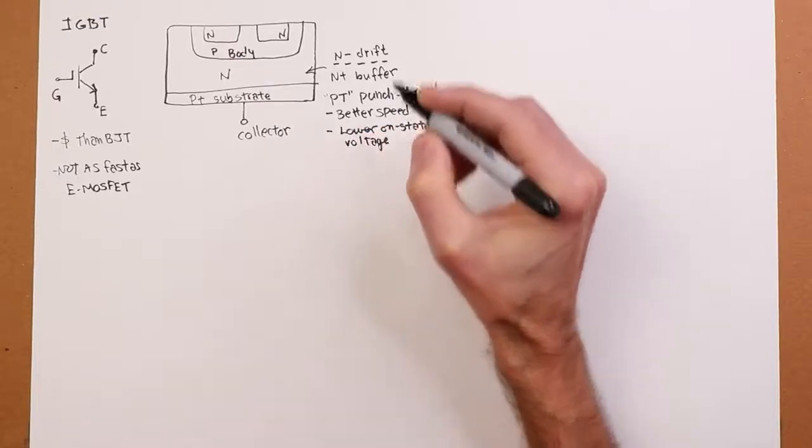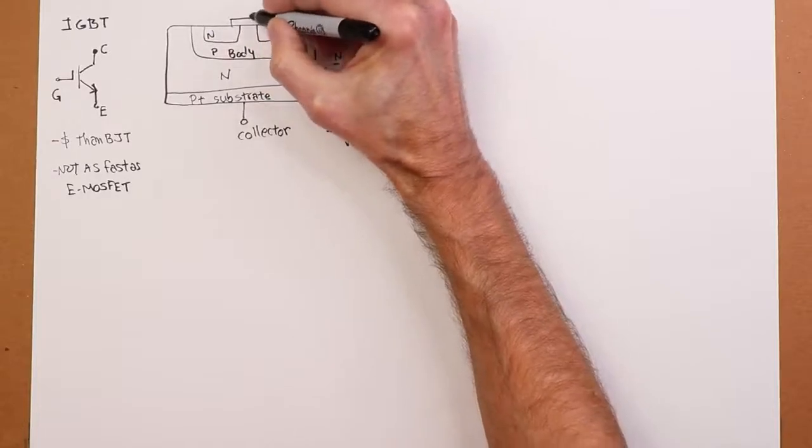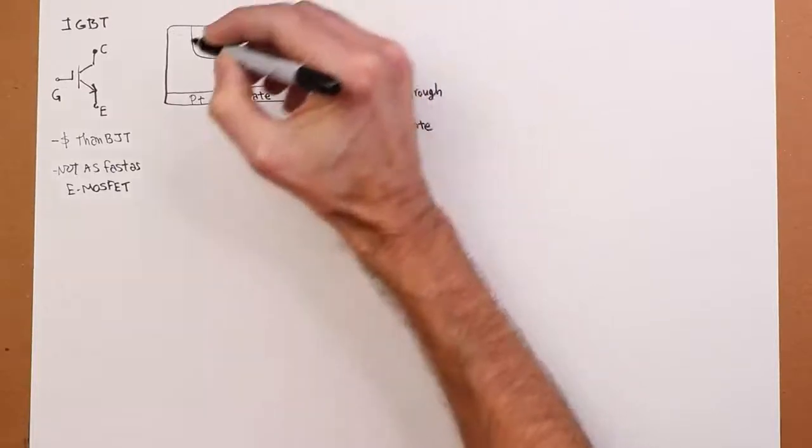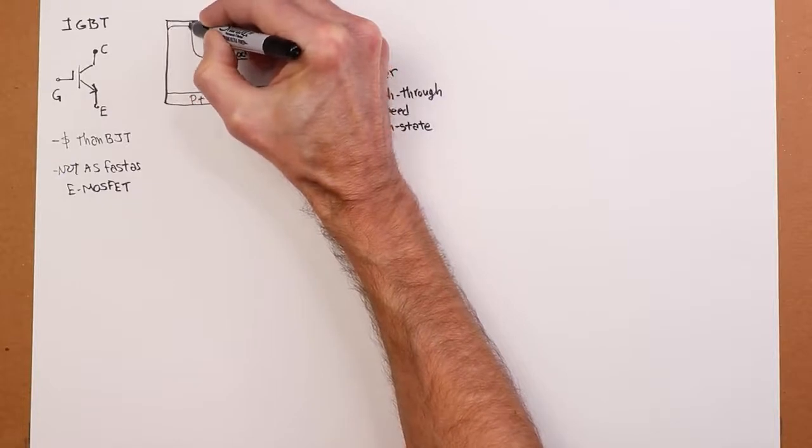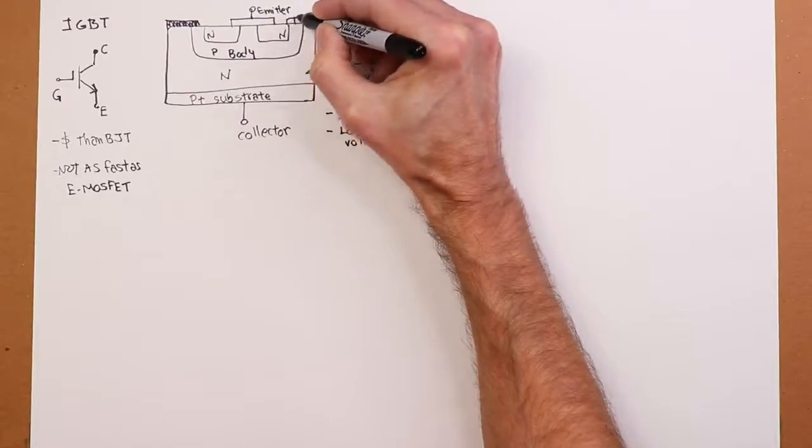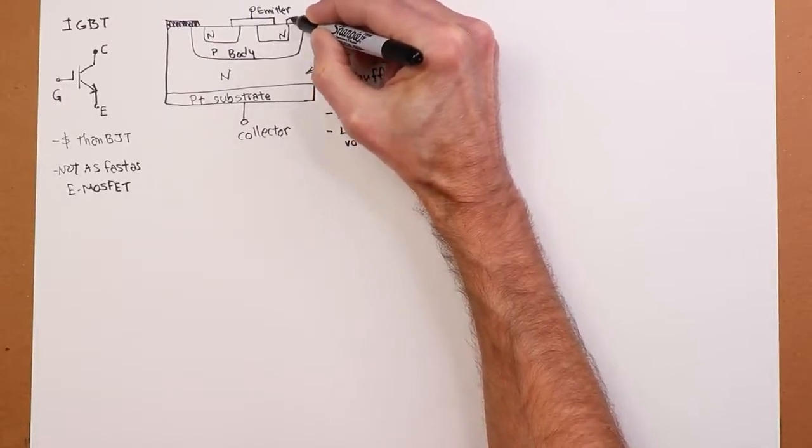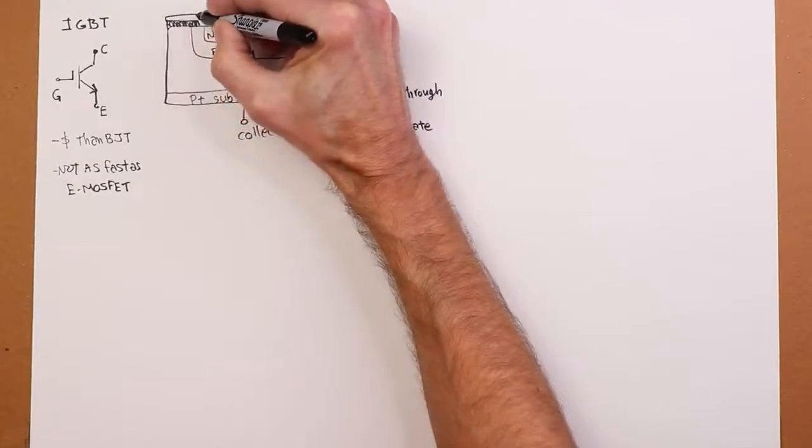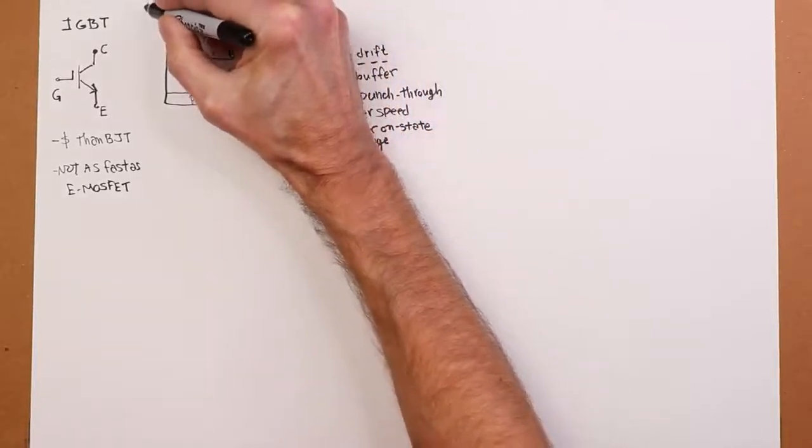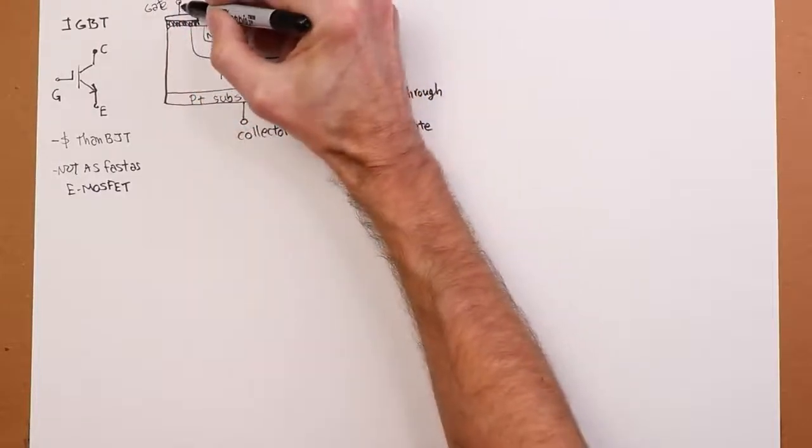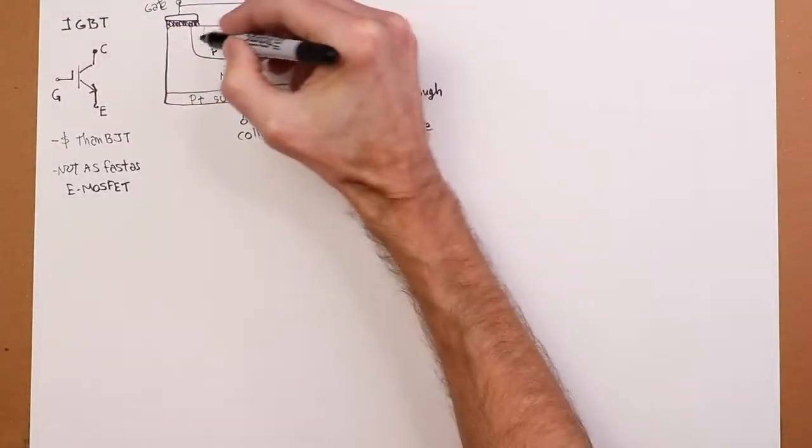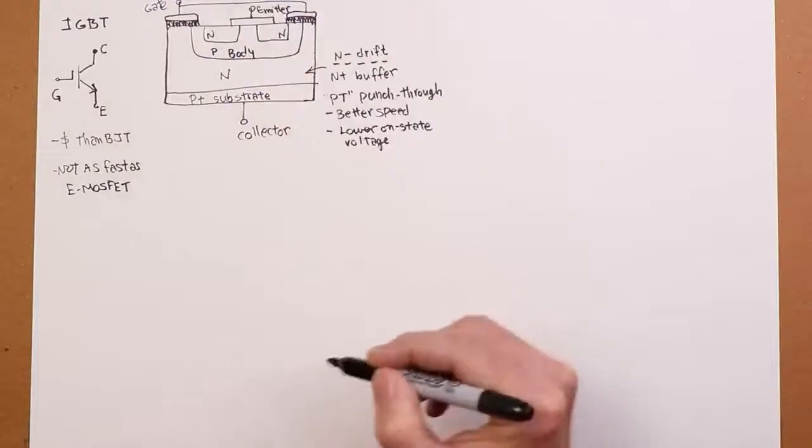Alright, the other connections that we have up top. Here's the emitter connection. We have some insulation over here. And then, we have some insulation over here for the gates. So, this is just connected across, like so. Alright, so you've got your gate. Standard, sort of, MOS gate affair. Then the emitter connection, off to your collector.